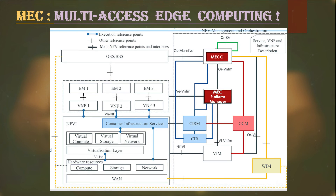The MEC orchestrator validates this request, checks the feasibility, and asks the MEC platform manager to confirm if it has sufficient hardware resources for the requirement. Once MEC confirms resource availability to the orchestrator, the orchestrator gives the command to the VIM — virtualized infrastructure manager — to create the virtual system for this new function. VIM confirms back to the orchestrator that the virtual machine is created. Then the orchestrator communicates this to the MEC manager that everything is ready and MEC can enable the function on it.